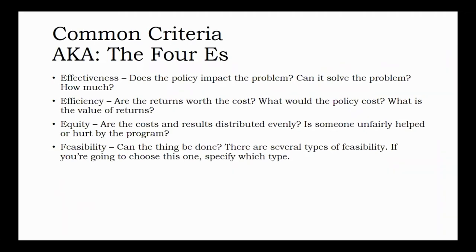Efficiency also accounts for the value of returns to your policy, which is difficult to estimate. What is the value of keeping a single person off the street for a given night, or increasing ridership on public transit, or one fewer person contracting a virus? To estimate returns, it helps to imagine what the problem itself costs — local hospitals might have millions of dollars in unpaid care because homeless individuals end up in the emergency room with ailments related to sleeping outside but will never be able to pay those bills. However you account for efficiency, make sure your inputs and outputs use the same unit — compare apples with apples. For example, the problem costs a total of $1 million and the solution is projected to cost $800,000; or the problem costs $1,400 per person impacted and we can solve it for $1,000 per person.